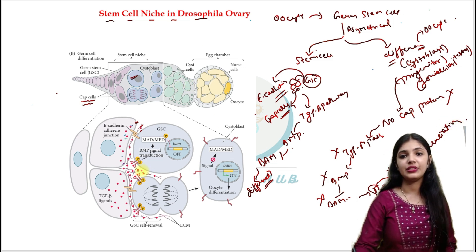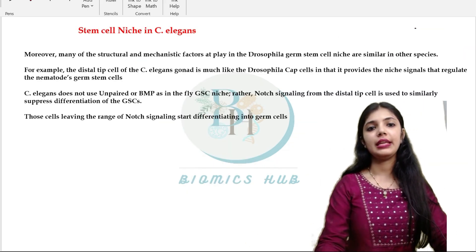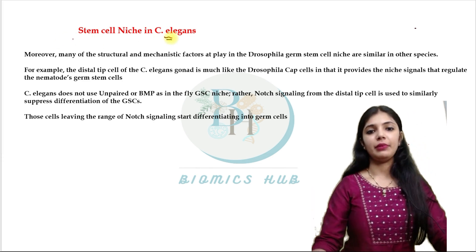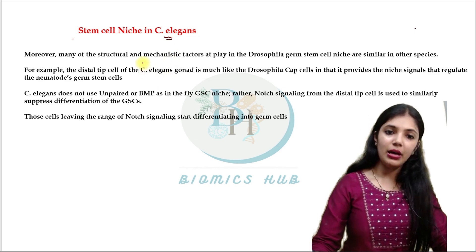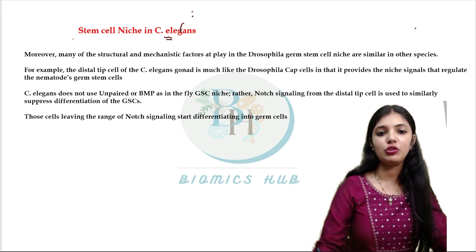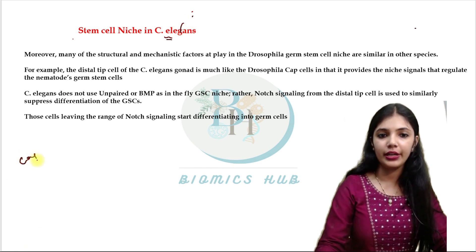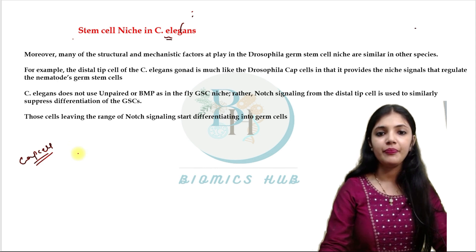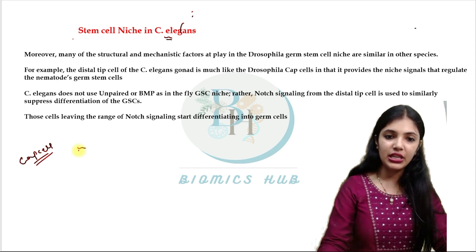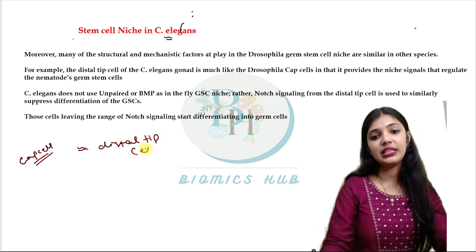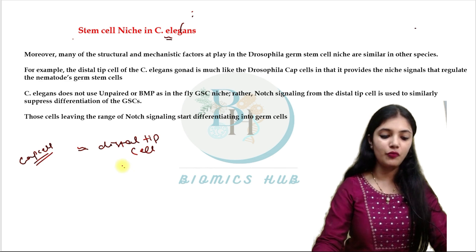This was all about the stem cell niche in Drosophila ovary. Next, we will discuss the stem cell niche in C. elegans. The cap cells present in Drosophila are analogous to the distal tip cell in C. elegans — the distal tip cell is similar to the cap cell in Drosophila.